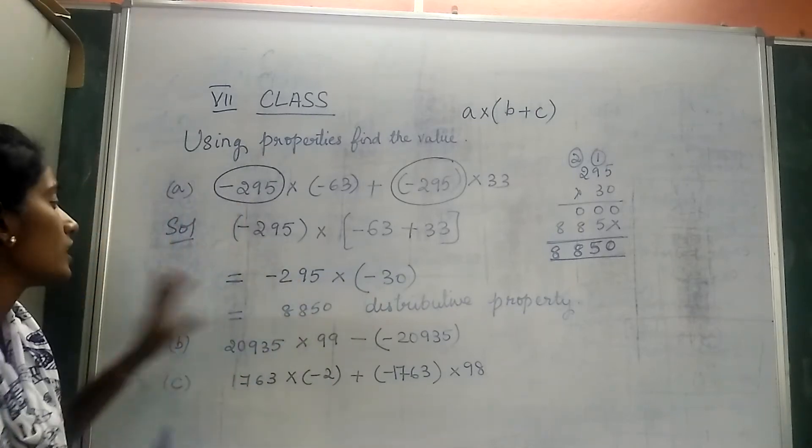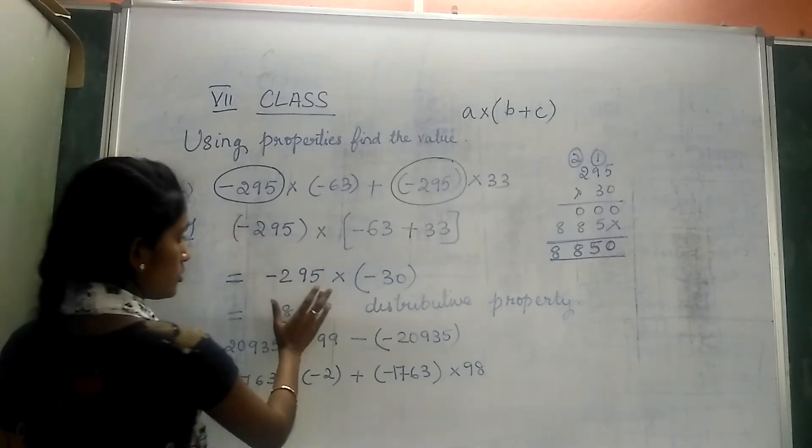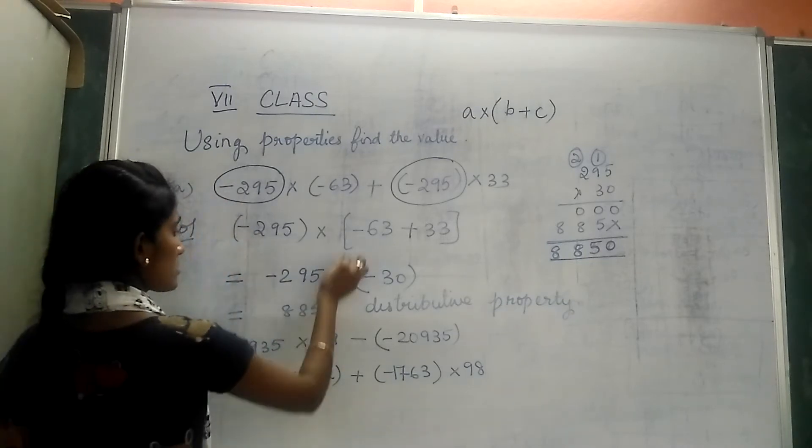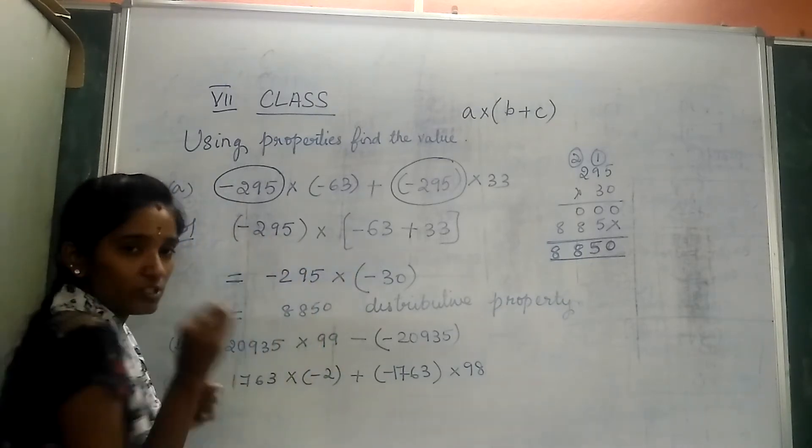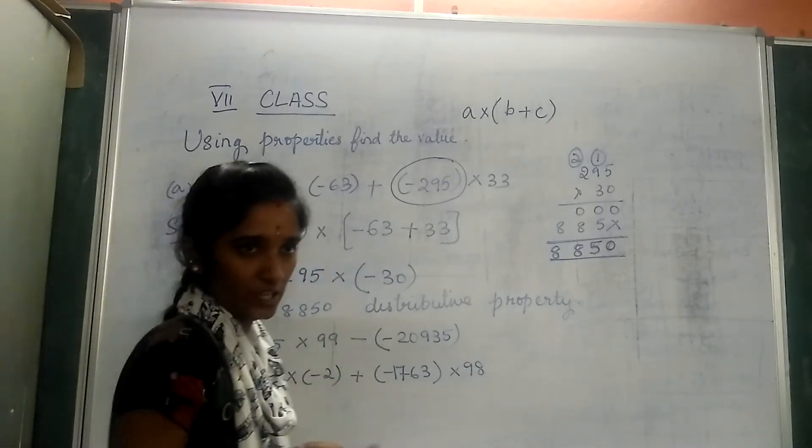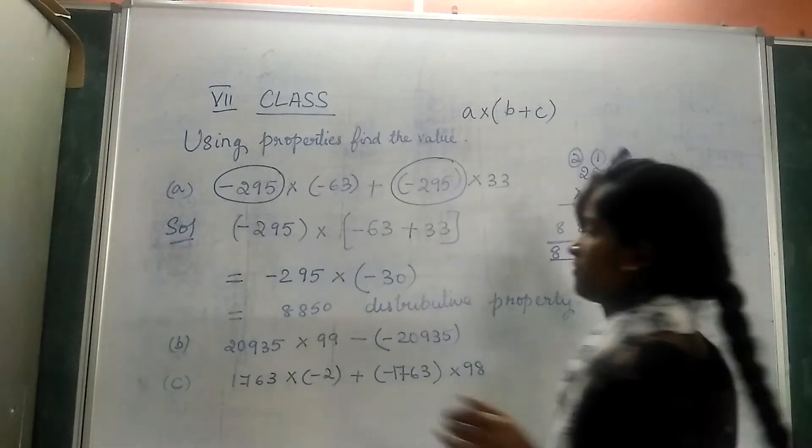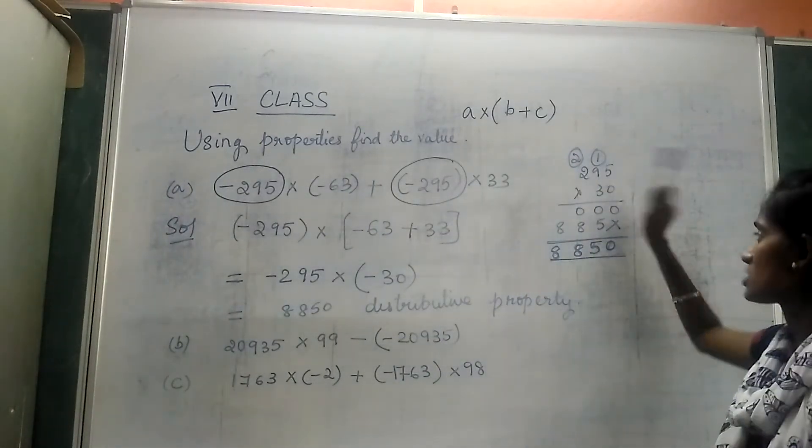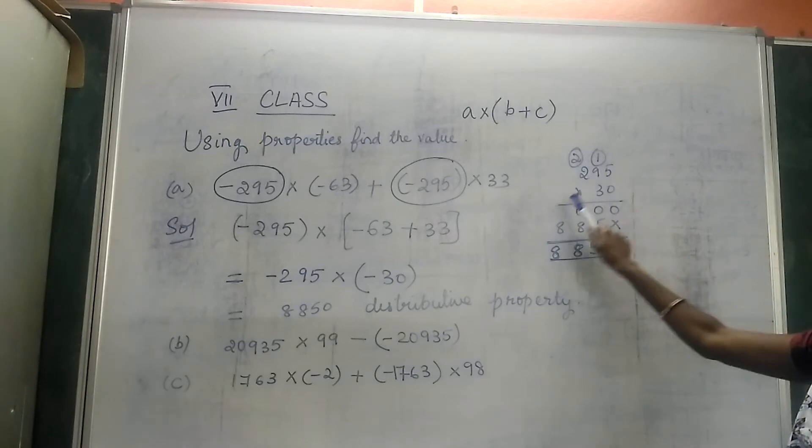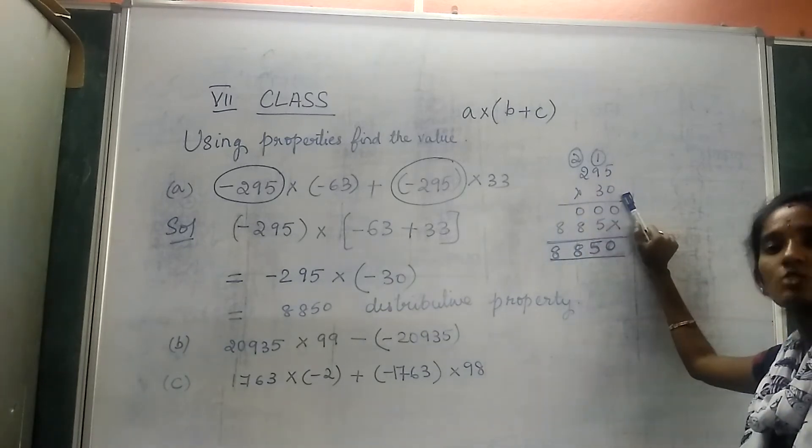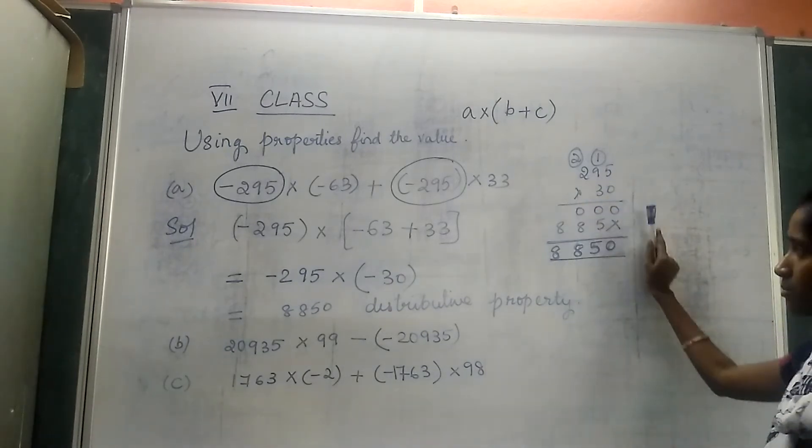Now after that we have -295 × (-30). What is the operation here? Multiplication. So for that case I have done the multiplication for you. Just look at 295 × 30. When 0 is multiplied with any number it remains 0.